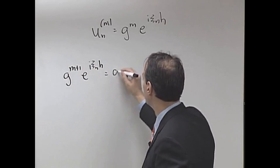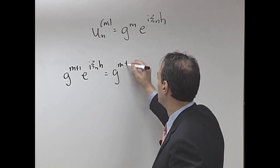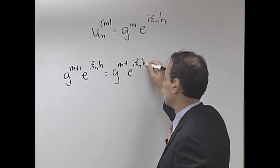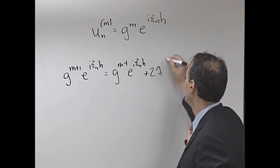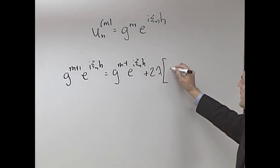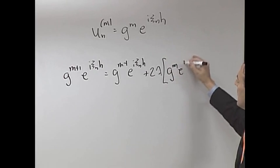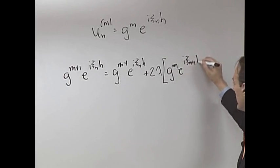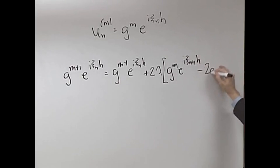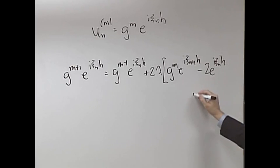This is equal to g of m minus 1, e to the i c of mh, plus 2 lambda. And then what you've got left over here is g of m, e to the i c of m plus 1h, minus 2, e to the i c of mh, plus g.